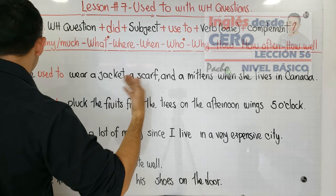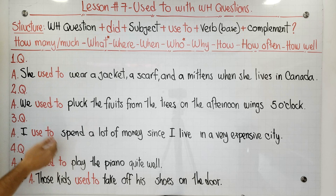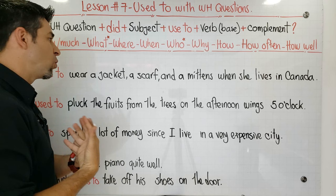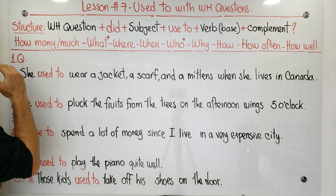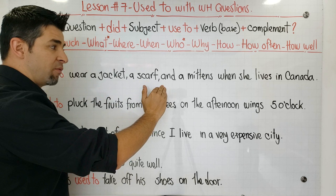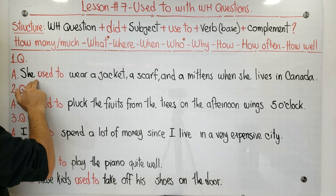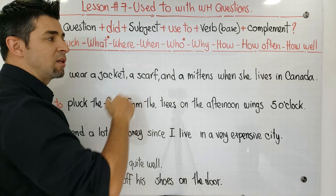We have five different sentences and the answers for the questions. These are not the questions — we are the ones that are going to create the questions. Before starting, we have to know the answer and check if it is correct. If we have some mistakes, we have to correct them first. Let's read number one together: She used to wear a jacket, a scarf, and a mittens when she lives in Canada.